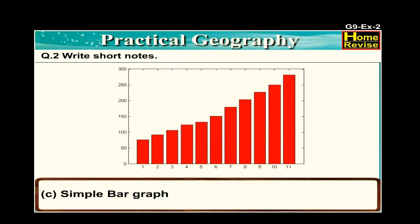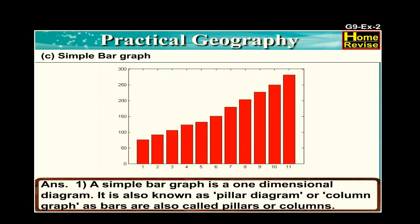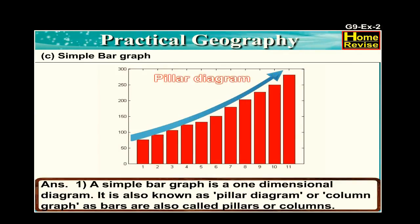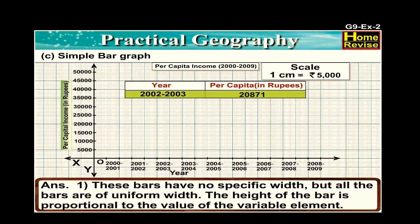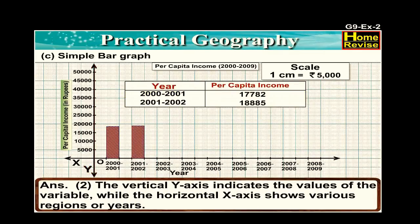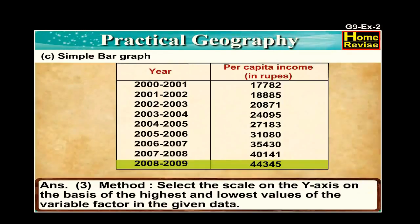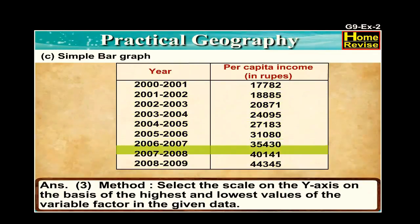Part c: the simple bar graph. A simple bar graph is a one-dimensional diagram, also known as a pillar diagram or column graph, as bars are also called pillars or columns. These bars have no specific width, but all bars are of uniform width. The height of the bar is proportional to the value of the variable element. The vertical y-axis indicates the values of the variable, while the horizontal x-axis shows various regions or years.